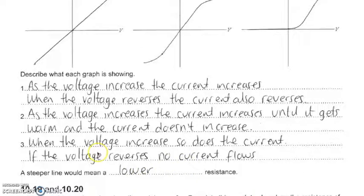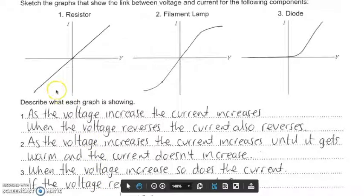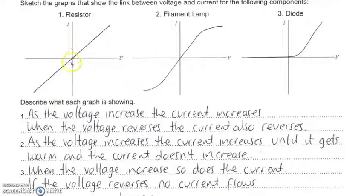One important thing to mention is the steepness of the graph tells us the resistance. If we've got a steeper line like this, that means we're going to get a lower voltage to pass in order for a higher current to pass through the wires.